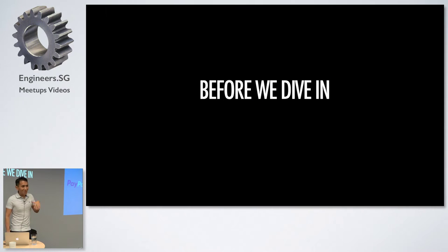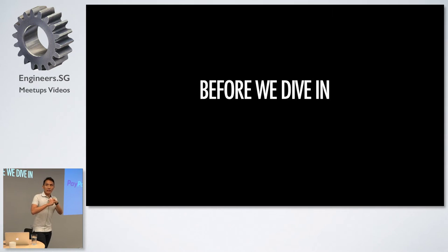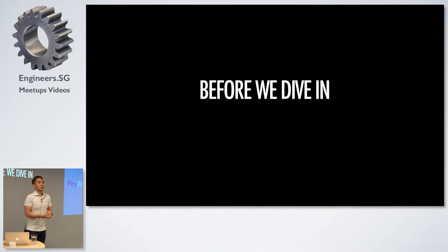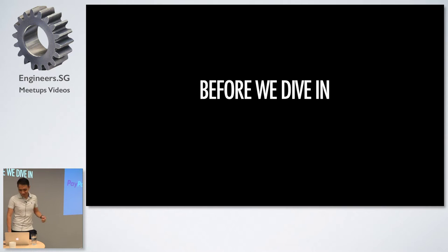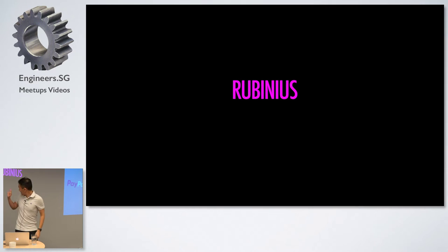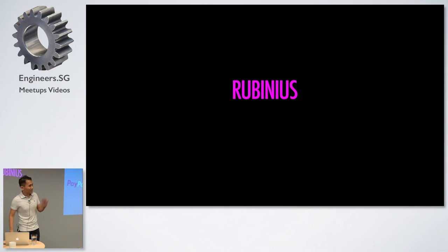Before we actually implement Lisp in Ruby, I'm going to deviate from MAL because the guide teaches you how to implement an interpreter — which reads the language and evaluates it in the host language without compiling to machine code or bytecode. But I'm going to compile to Rubinius bytecode. Rubinius has been around, it's somewhat controversial, but let's stick to the topic.